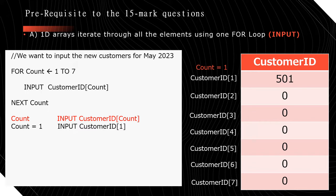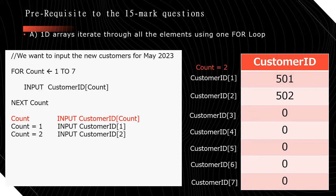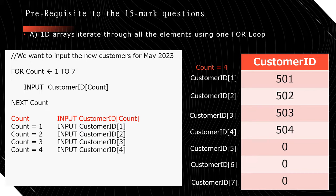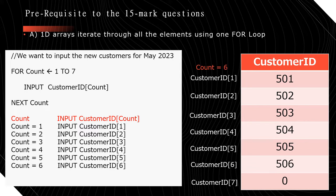Now we want to input new customers for May 2023. Again, because we're inputting data into an array and we know the size, the most efficient loop is a for loop. The code: for count assigned from 1 to 7, input CustomerID[count], next count. So count equals 1 inputs 501, count equals 2 inputs 502, count equals 3 inputs 503, count equals 4 inputs 504, count equals 5 inputs 505, count equals 6 inputs 506, and count equals 7 inputs 507.